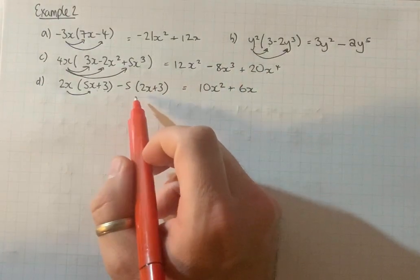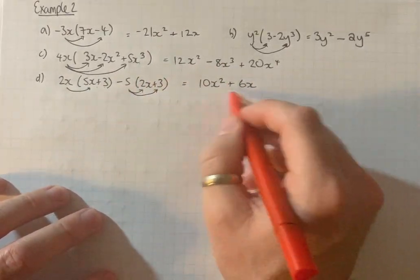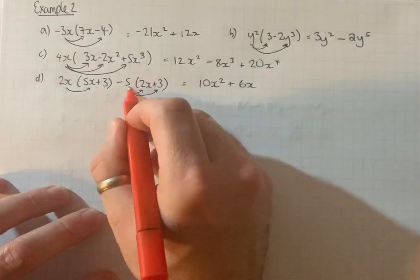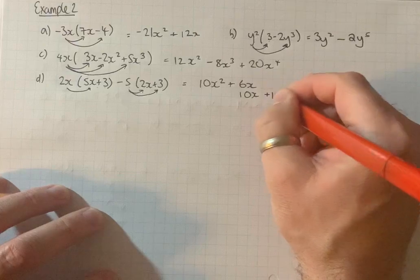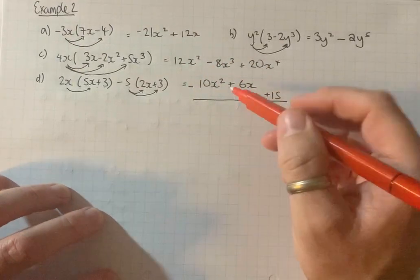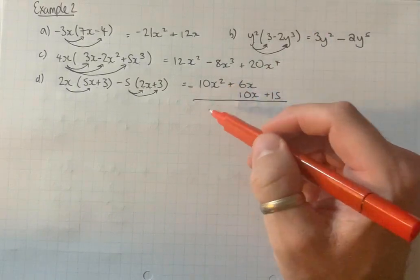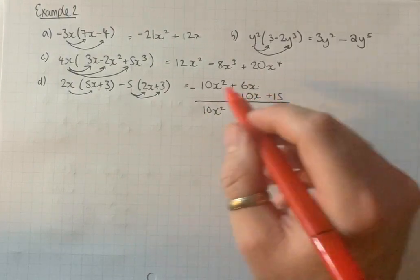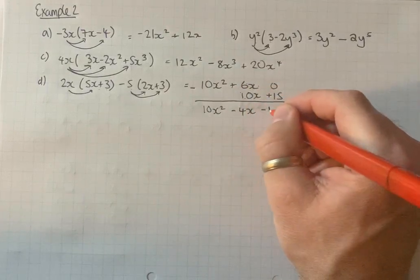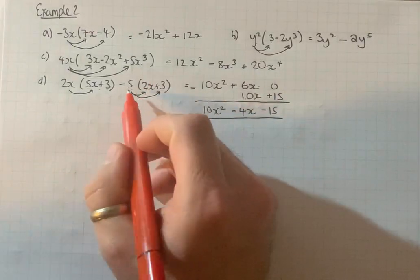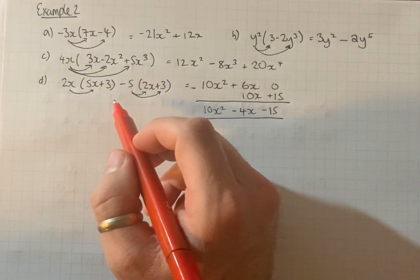Now the second one. I'm going to expand it by multiplying by 5 and I'll write those solutions underneath, and I'll line up common terms. So 5 times 2x is 10x. 5 times 3 is 15. And then I'm subtracting them. So x squared, x, next to the numbers. So 10x squared take away nothing gives 10x squared. 6x take away 10x is minus 4x. 0 take away 15 is minus 15. You can expand it by multiplying by minus 5 and then just bringing together like terms.